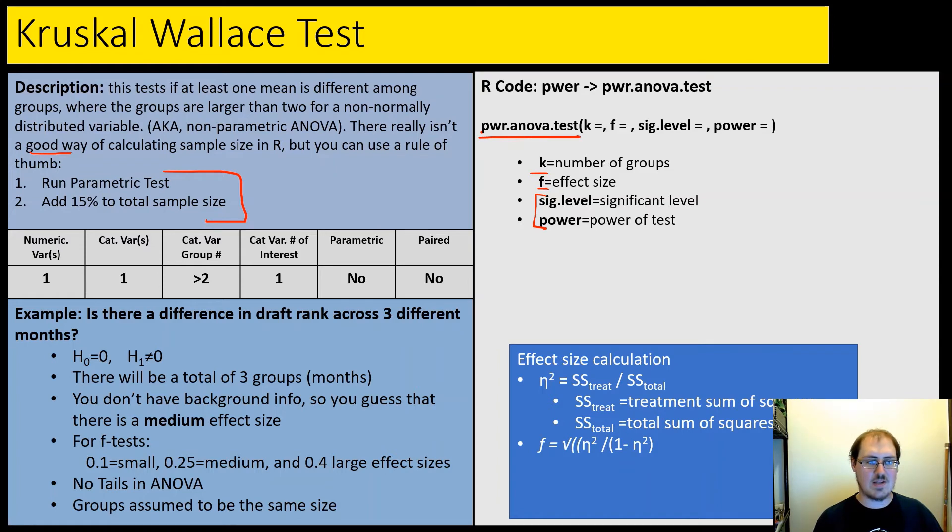So for example, we might ask, is there a difference in draft rank across three different months? So our K, number of groups, is three. We're going to guess a medium effect size here. And then for F tests, again, remind yourselves that a medium effect is 0.25. And there's no tails. Again, if we do need to get effect size ourselves, we have to get the sums of squares to get partial eta squared, and then we can plug that in to get our effect size F.